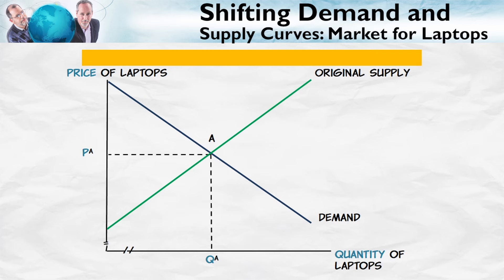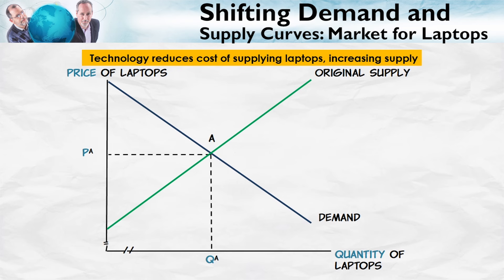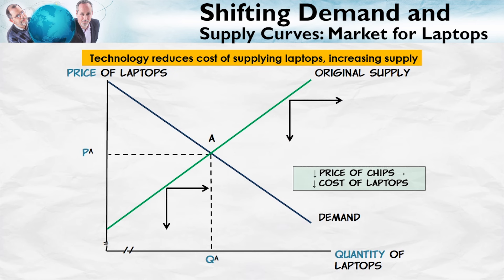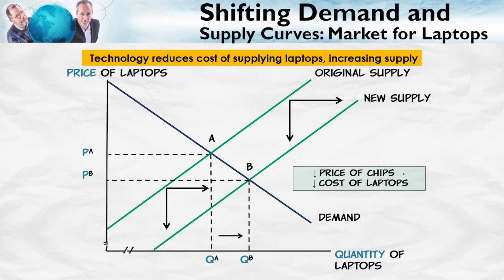Here's the market for laptops, with the demand and the supply of laptops. We all know that technology has reduced the cost of computer chips — Moore's Law and all that. The reduction in the price of computer chips reduces the cost of producing laptops. A reduction in costs is modeled by an increase in supply: the supply curve moves to the right and down. The model predicts, therefore, that the price of laptops will fall and the quantity bought and sold will increase. Pretty good prediction.